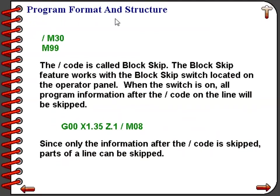The slash code is called the block skip. The block skip feature works with the block skip switch located on the operator panel. When the switch is on, all of the program information after the slash code on that line will be skipped over.